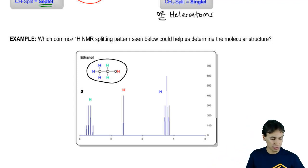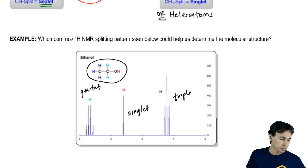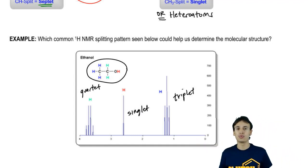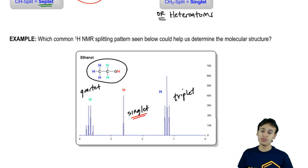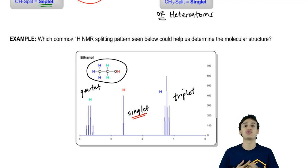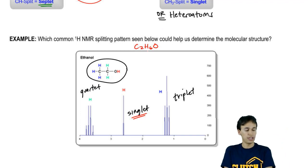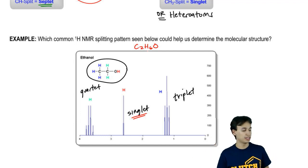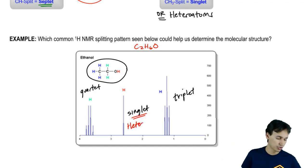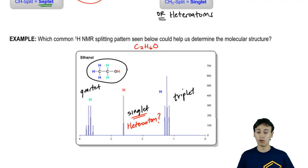What do we have? We have a quartet, a singlet, and a triplet. Do any of these splits give us a hint as to what the molecule could look like? I see one big hint right away: we have a singlet. What do singlets indicate? Singlets indicate either heteroatoms or carbons that don't have any hydrogens. In this case, if we were given the molecular formula C2H6O, we'd think that singlet might be coming from a heteroatom — maybe this is an alcohol since there's an O present.